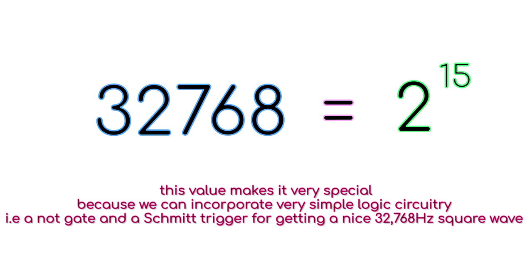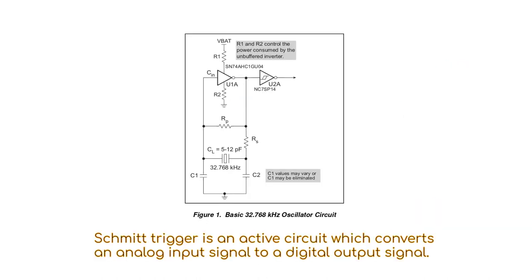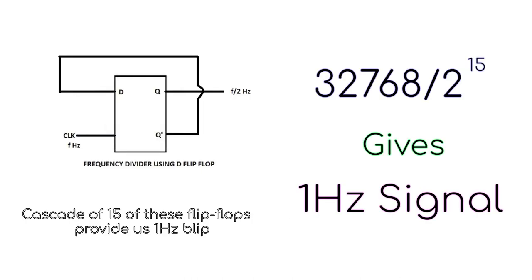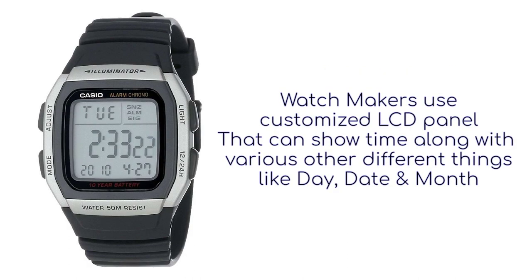We can incorporate very simple logic circuitry, that is a NAND gate and a Schmitt trigger, for getting a nice 32.768 kilohertz square wave which we can feed to a cascade of 15 flip-flops to get a very nice 1 hertz pulse. After getting a nice 1 hertz flip, all that remains is some sort of display mechanism like an LCD screen.